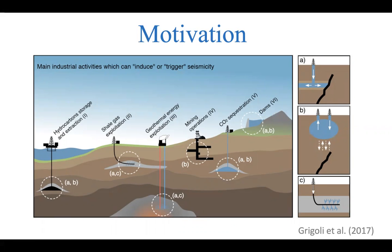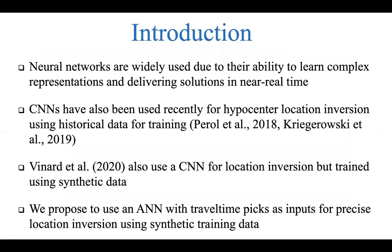For threat mitigation, a traffic-light system is usually implemented which requires real-time location and magnitude determination capabilities. Neural networks are gaining huge popularity due to their ability to learn complex representations from data and deliver solutions in near real-time.